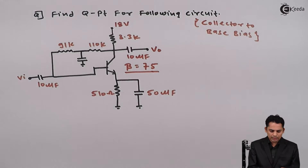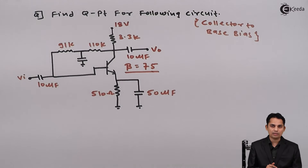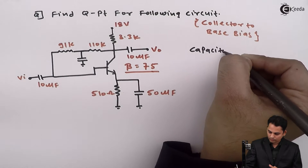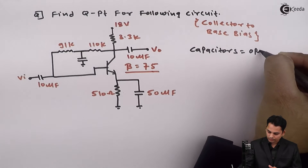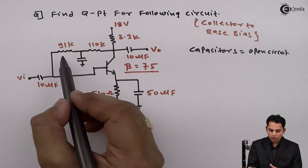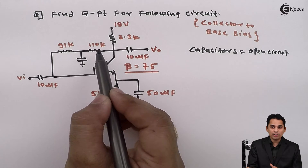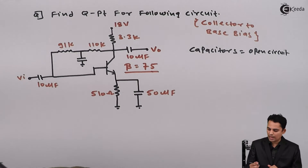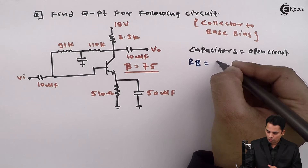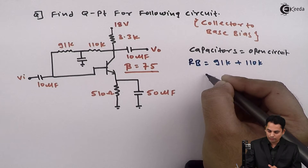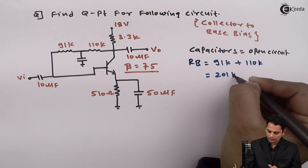Now, if you see there is one capacitor between two resistors, but we know that for DC analysis, capacitors are open circuited. If capacitors are open circuited, these two resistors will be in series with each other. Hence, total base resistor RB is equal to 91 kilo ohms plus 110 kilo ohms, which is approximately equal to 201 kilo ohms.